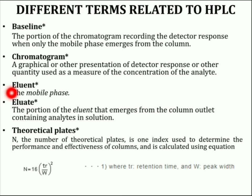The next term is eluent. Eluent is the mobile phase — it moves the analyte through the chromatograph. In liquid chromatography, the eluent is the liquid solvent. In gas chromatography, it is the carrier gas.